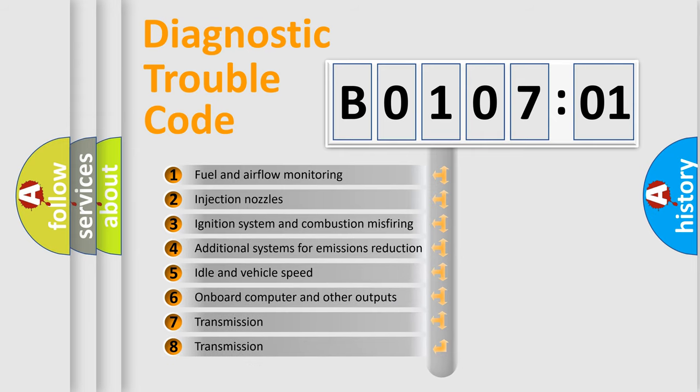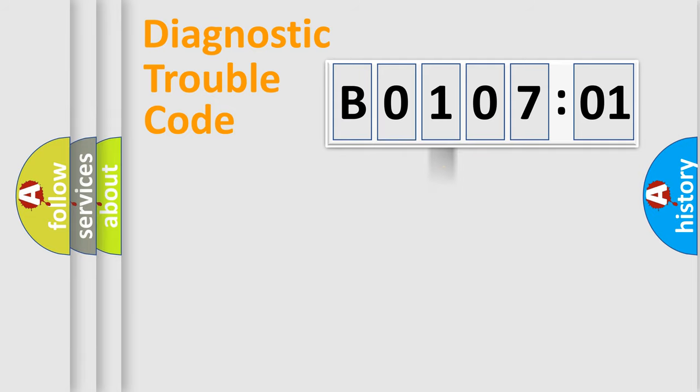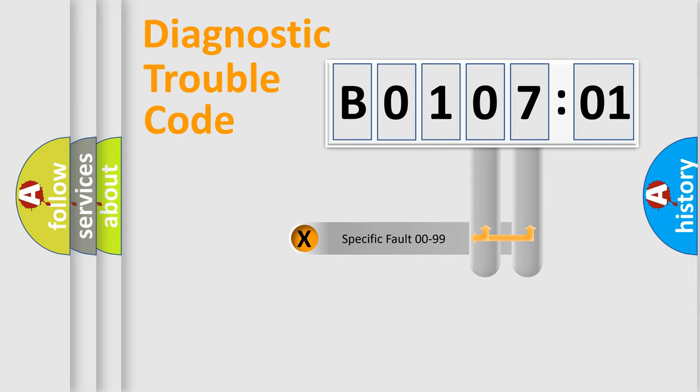The third character specifies a subset of errors. The distribution shown is valid only for the standardized DTC code. Only the last two characters define the specific fault of the group.